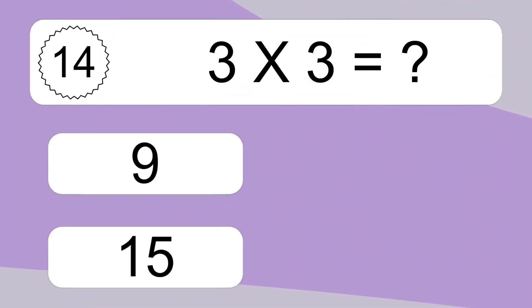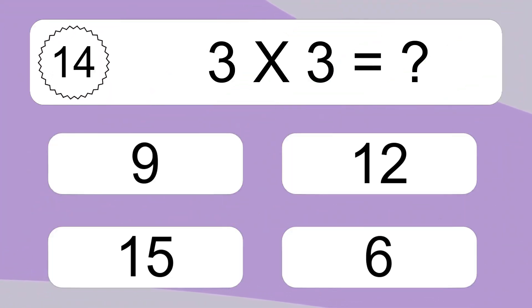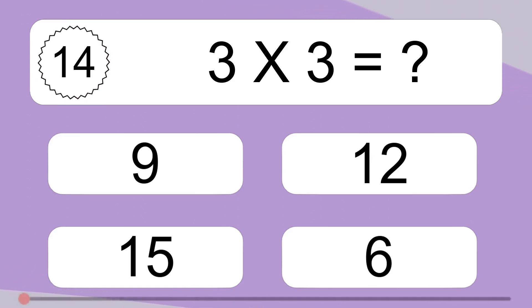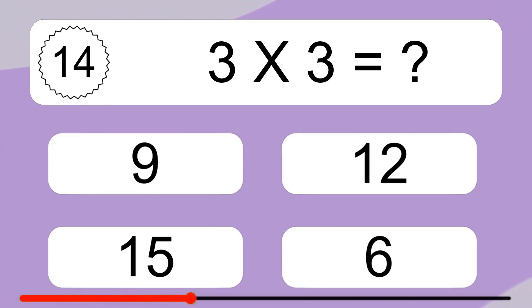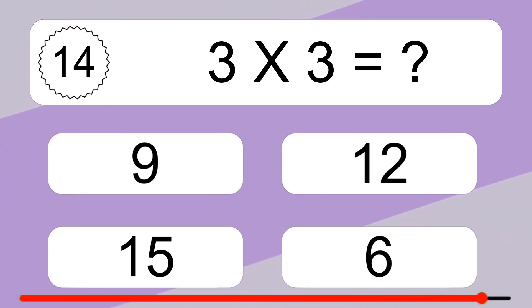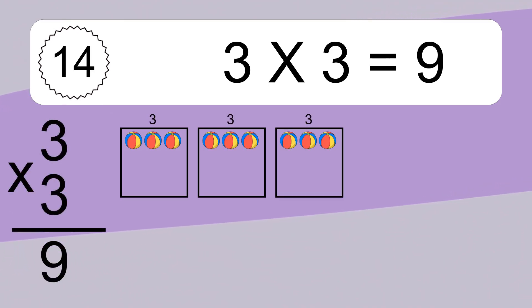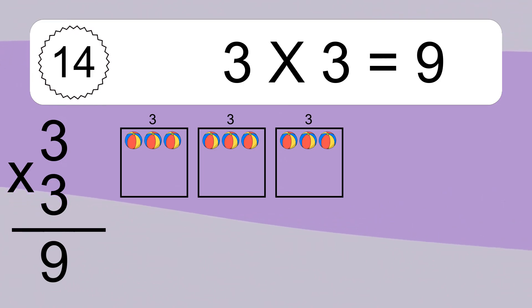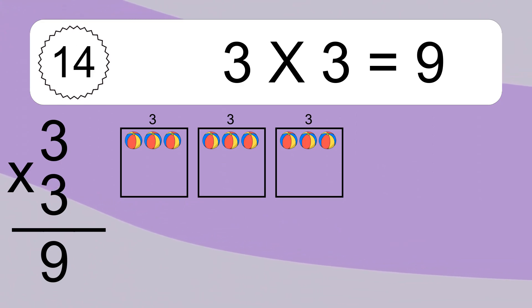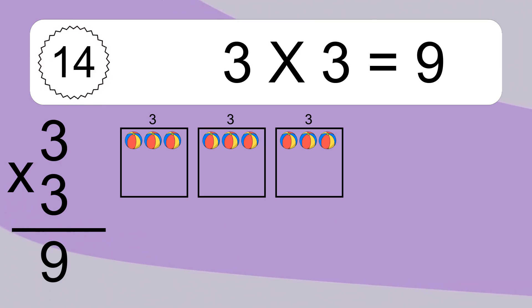3 times 3 equals what? We have 3 boxes, and each box has 3 colorful balls inside. 3 times 3 equals 9.